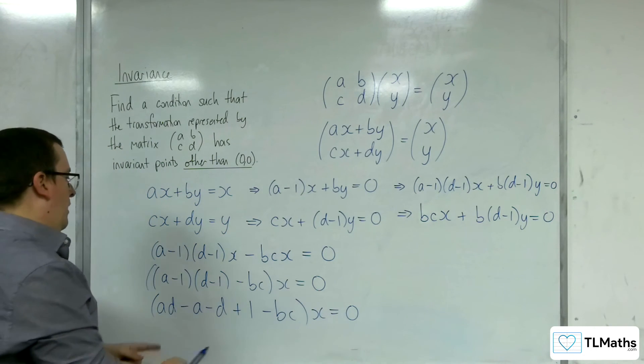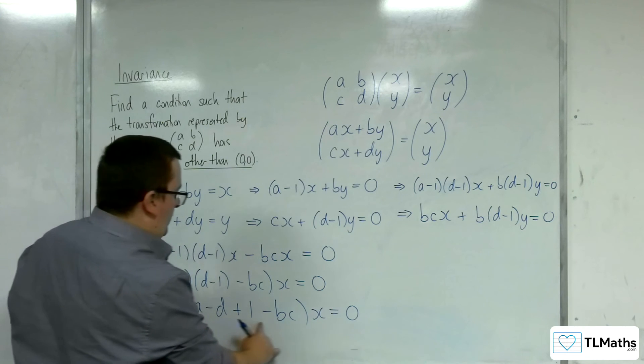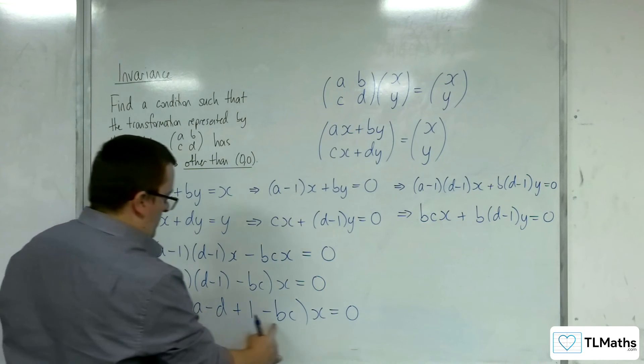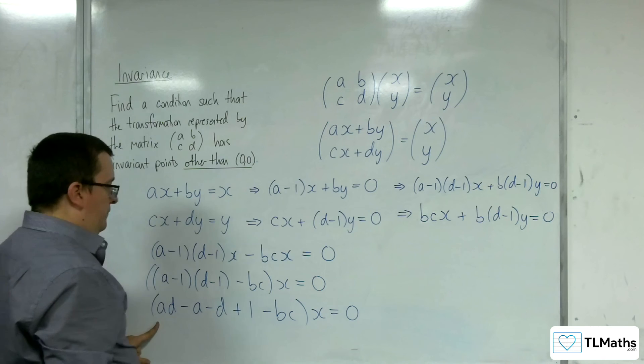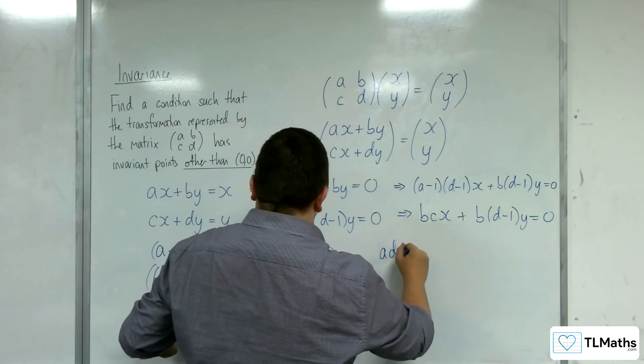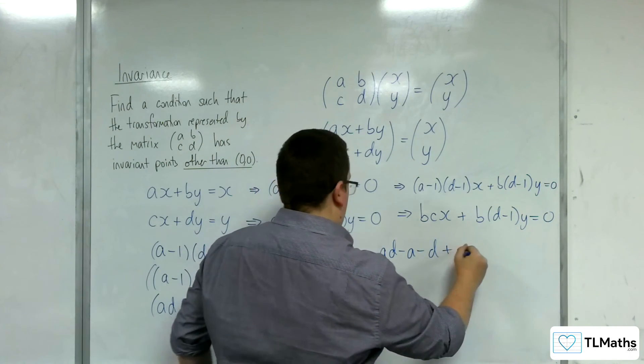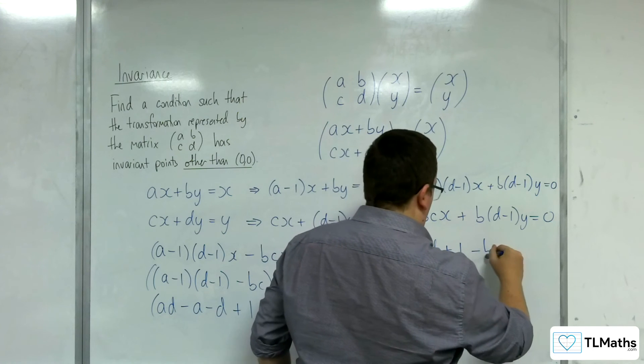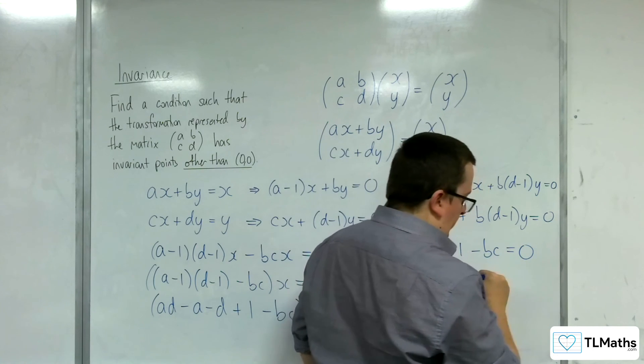So really all I'm interested in is, alternatively, having that as 0. So ad - a - d + 1 - bc being equal to 0.